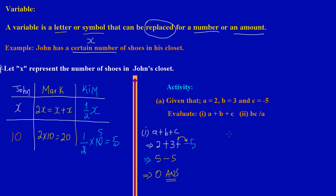In part 2, we have bc divided by a — written as b times c all over a. Substituting: b is 3, c is negative 5, and a is 2 at the bottom. When you see two letters beside each other it means to multiply. So we have 3 times negative 5, all over 2. A positive times a negative gives us negative 15 over 2.